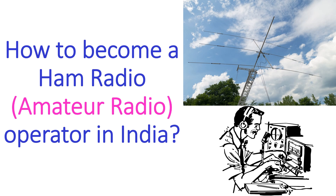How to become a HAM radio amateur radio operator in India. Any citizen above the age of 12 years can become a HAM by qualifying in the Amateur Station Operator's License Restricted Examination and obtaining a valid license. Those between 12 to 18 years will have to provide an undertaking by the parent or guardian in the prescribed format. Applicants above the age of 18 years need not provide such undertaking.